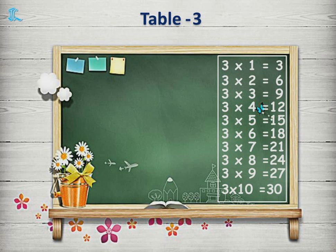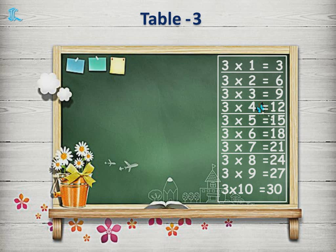So let's repeat the Table 3 once again. 3 1s are 3. 3 2s are 6. 3 3s are 9. 3 4s are 12. 3 5s are 15. 3 6s are 18. 3 7s are 21. 3 8s are 24. 3 9s are 27. 3 10s are 30.